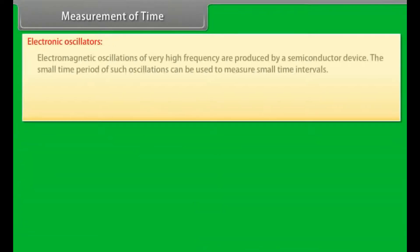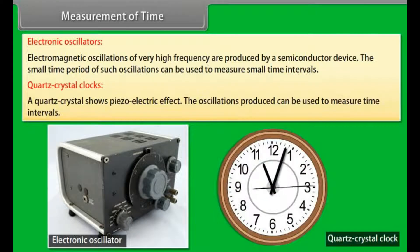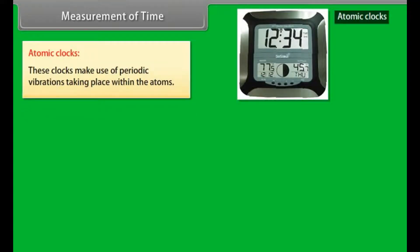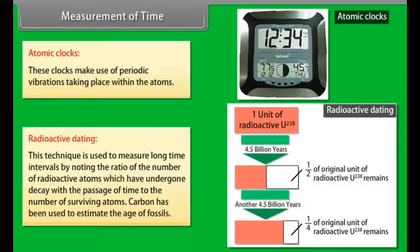Electronic oscillators: electromagnetic oscillations of very high frequency are produced by a semiconductor device. The small time period of such oscillations can be used to measure small time intervals. Quartz crystal clocks: a quartz crystal shows piezoelectric effect. The oscillations produced can be used to measure time intervals. Atomic clocks: these clocks make use of periodic vibrations taking place within the atoms. Radioactive dating: this technique is used to measure long time intervals by noting the ratio of the number of radioactive atoms which have undergone decay with the passage of time to the number of surviving atoms. Carbon has been used to estimate the age of fossils.